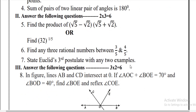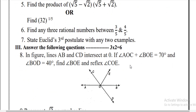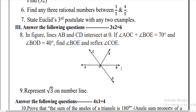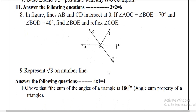The third section has questions for 3 marks — one added question. The last question is worth 4 marks — that is the 10th question: the sum of the angles of a triangle is 180 degrees, prove the theorem.